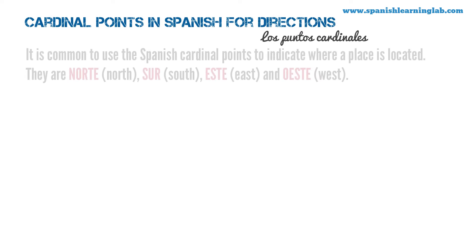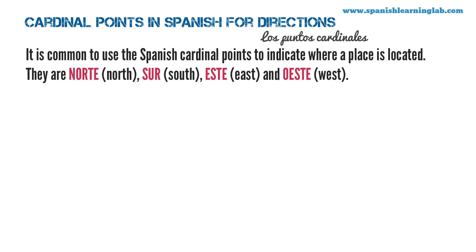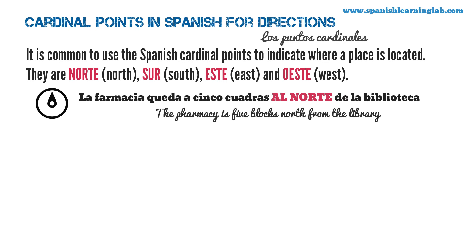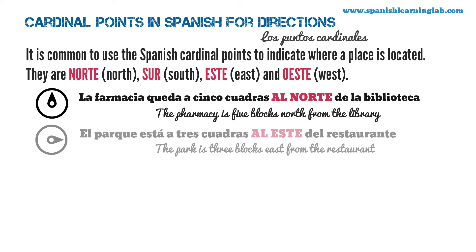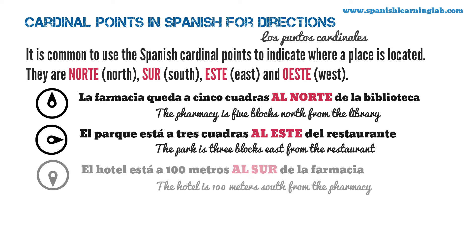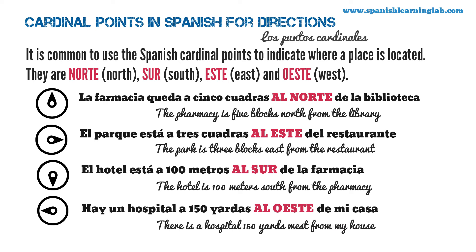Cardinal points in Spanish for directions — los puntos cardinales. In many countries, it is common to use cardinal points to indicate where a place is located. They are: norte, sur, este, and oeste. You may add them to sentences after saying the distance. For example: La farmacia queda a 5 cuadras al norte de la biblioteca. El parque está a 3 cuadras al este del restaurante. El hotel está a 100 metros al sur de la farmacia. Hay un hospital a 150 yardas al oeste de mi casa.